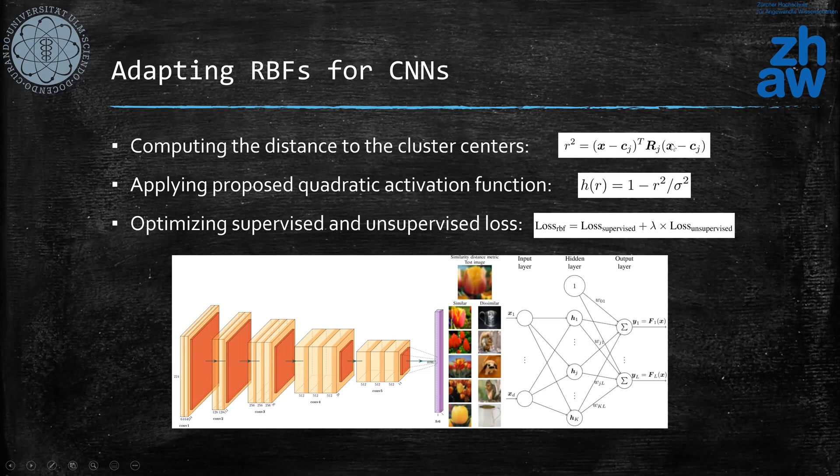Afterwards, we have the computation of the distance using matrix multiplication, and our proposed activation is just an addition and division by a constant which shows the width of the kernel. At the end, during the optimization, we optimize the unsupervised loss and minimize it, and we will have a supervised loss, which could be a normal softmax cross entropy or any type of other loss that we would like to optimize for classification or regression.